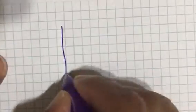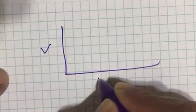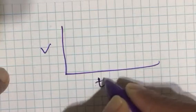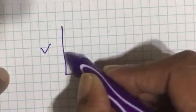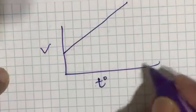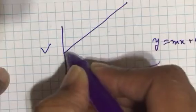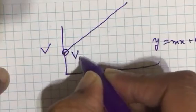The graph of volume versus temperature in degree centigrade is like this. This is called Y equals mx plus c type of graph. This is the volume of a gas at 0 degree centigrade.